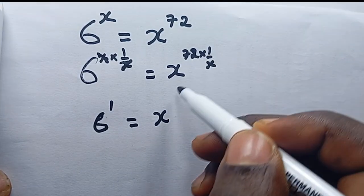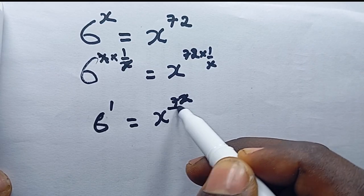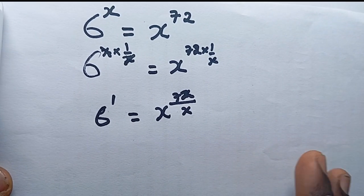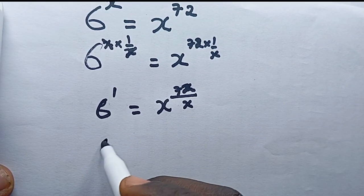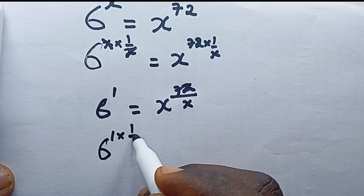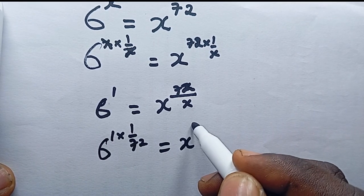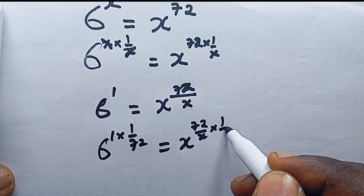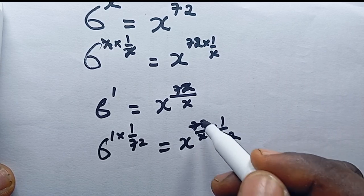Next I'll find a way to remove this 72. I will multiply both sides by 1 over 72, so this 72 is going to divide.